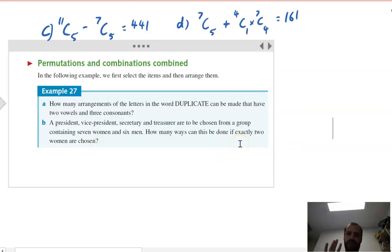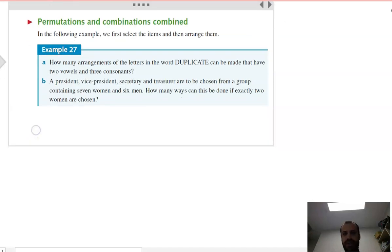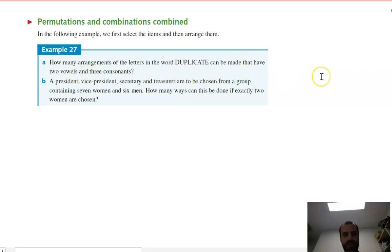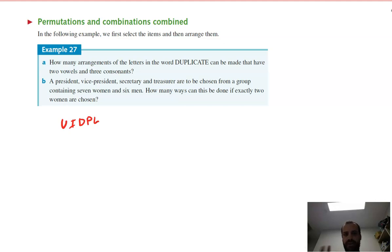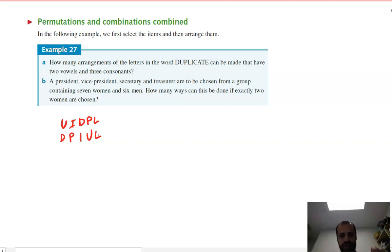Sometimes questions combine permutations and combinations. For example: how many arrangements of letters from the word 'duplicate' have two vowels and three consonants? One example arrangement is U, I, D, P, L — and another could be D, P, I, U, L. These use the same combination of letters but in different arrangements.